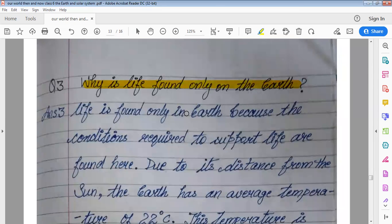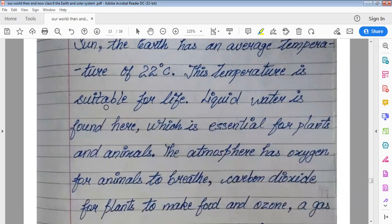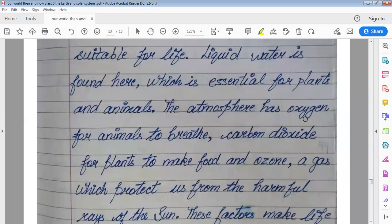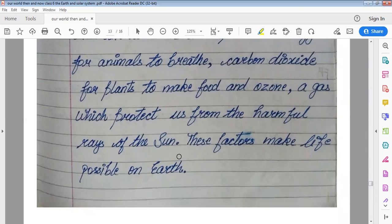Why is life found on Earth? Life is found only on Earth because the conditions required to support life are found here. Due to its distance from the sun, the Earth has an average temperature of 22 degrees Celsius. This temperature is suitable for life. Liquid water is found here, which is essential for plants and animals. The atmosphere has oxygen for animals to breathe, carbon dioxide for plants to make their food, and ozone, a gas which protects us from the harmful rays of sun. These factors make life possible on Earth.